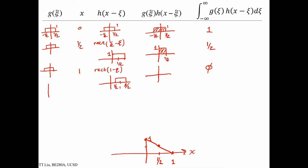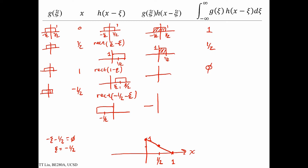Similarly, at x equals minus one-half, we draw rect of minus one-half minus xi. This is a rect function centered where xi equals minus one-half. When we multiply it by the original rect function, the overlap runs from minus one-half to zero, giving an area of one-half. So at x equals minus one-half, the convolution value is one-half. By symmetry, at x equals minus one, the value is zero.